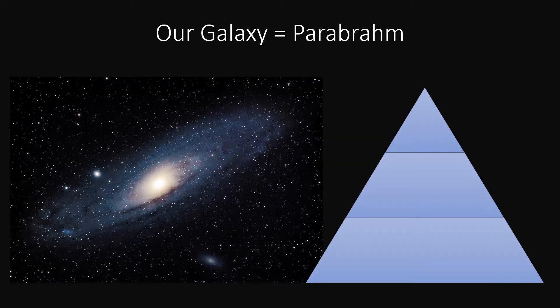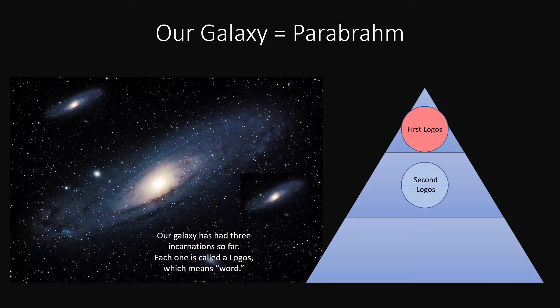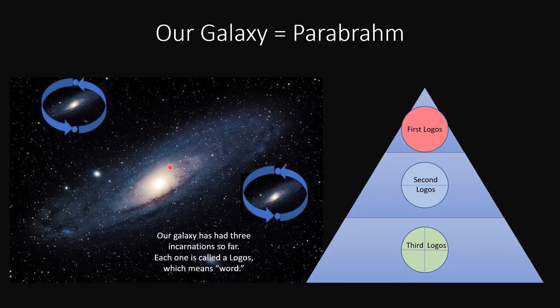Now that threefold process can also be looked at in another way. It can be seen as three incarnations. Now each of these incarnations is called a Logos, which means word. So here we have one previous incarnation of our galaxy, the first Logos. A second incarnation of our galaxy, the second Logos. And we are said to be in the third incarnation, or in the third Logos. Obviously this is a pretty complicated system. Here these have gone through their rounds, so to speak, and we're in the third Logos.